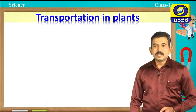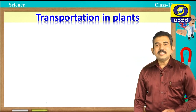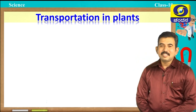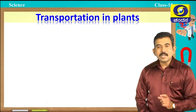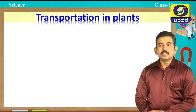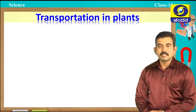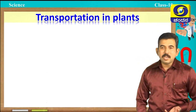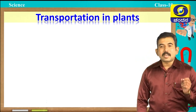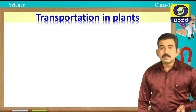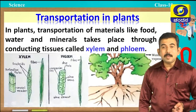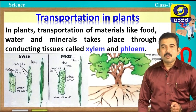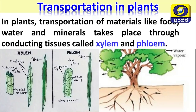First let us study transportation in plants. In the last class we discussed transportation in animals. Similarly, in plants this transportation is one of the essential life processes. In plants, the transportation is very simple compared to animals. The conducting tissues — mainly xylem and phloem — play a very important role in transportation of water, food, and minerals.